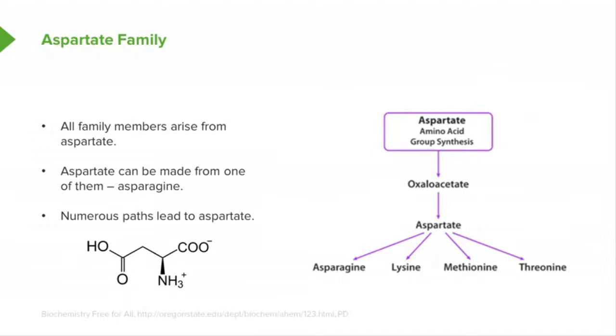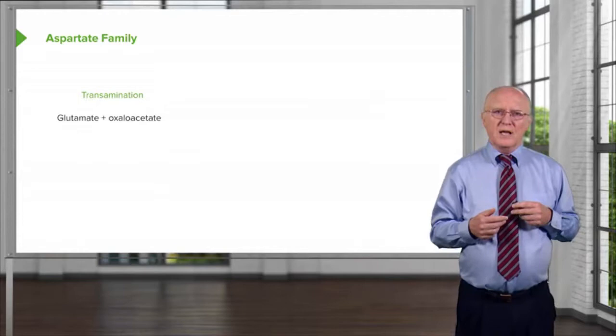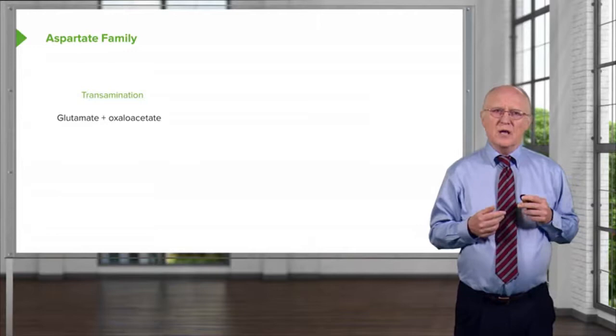There are numerous ways that lead to aspartate, so I'm only going to talk about a couple of them. One of the more common ways in which aspartate can be made is by the process of transamination that we've already talked about. Here's one sample transamination, and there are many different transaminations that can produce aspartate.